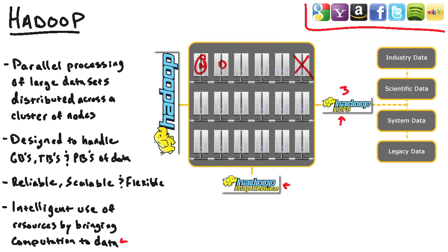Hadoop works really well with all kinds of data in all different formats — this is where the flexibility comes into play. Structured, semi-structured, unstructured — you name it, you put it into Hadoop. As long as you can parse it using MapReduce, you can get the data. This includes XML formats, JSON formats, regular text data, and delimited data like comma and tab delimited. The list goes on — it truly works with all kinds of data.